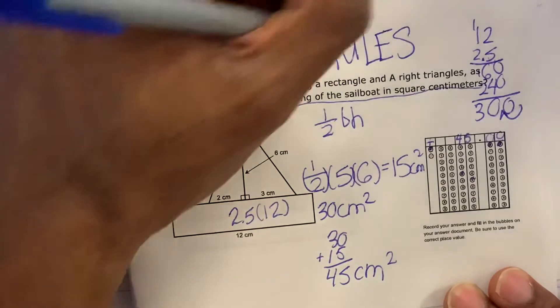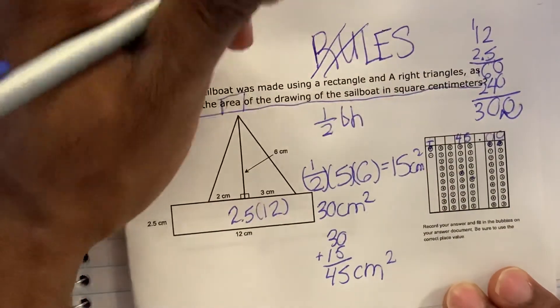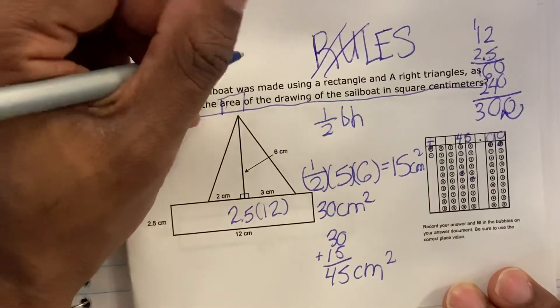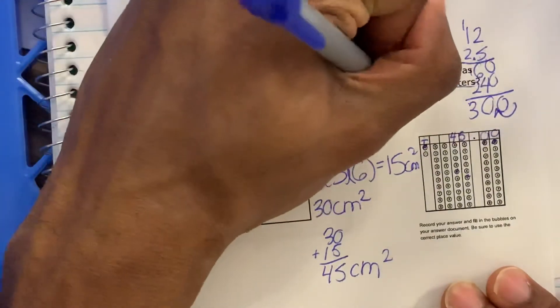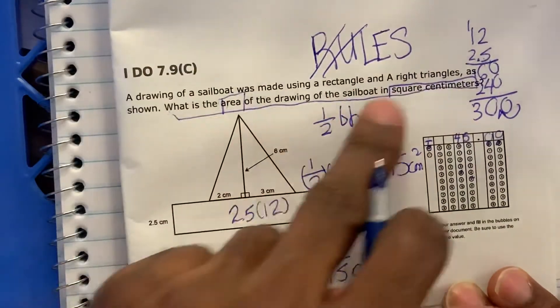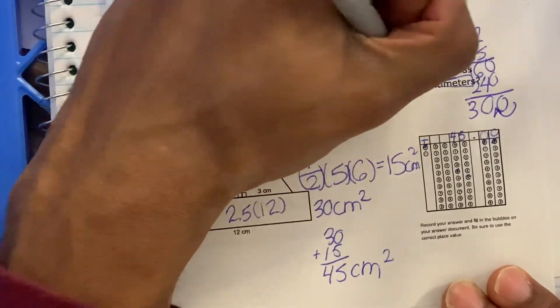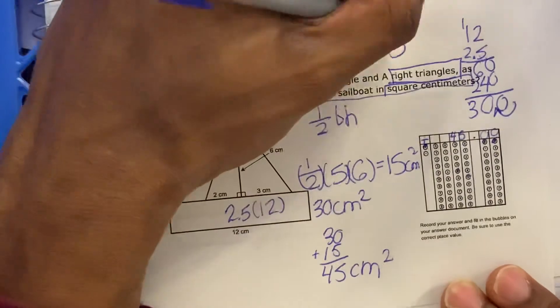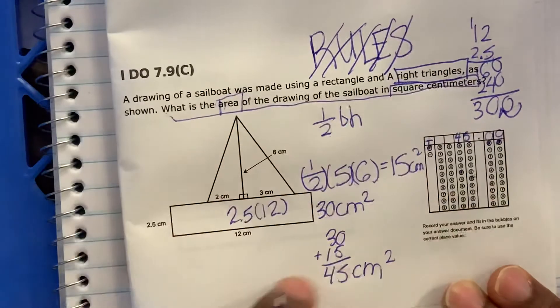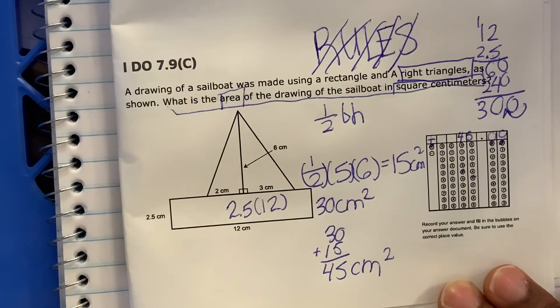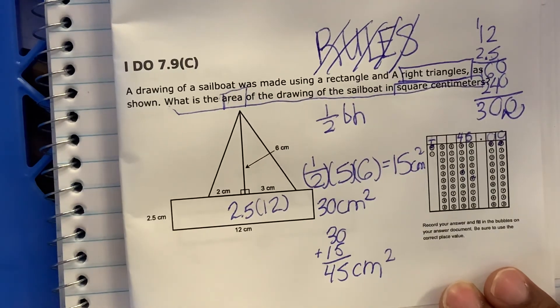Area is a keyword. We underline the question. Labeled. So area, sailboat in square centimeters, so we put centimeters squared. Right triangle. All right. We evaluated and we solved. All right. So let me know if you have any questions. We'll do more problems like this. I'll get extra practice. Thank you for watching.